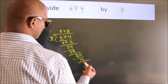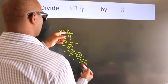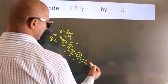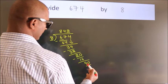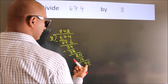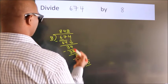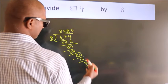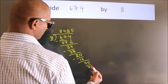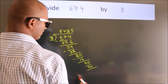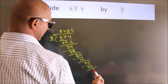After this, we already have the decimal, so directly take 0. So 40. When do we get 40 in the 8 table? 8 times 5 equals 40. Now we subtract. We get 0.